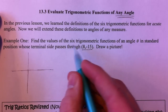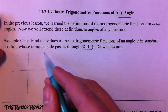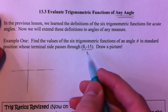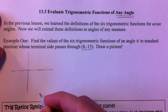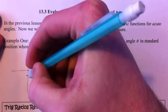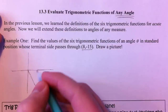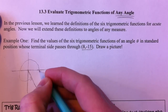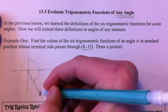Find the values of six trig functions in standard position whose terminal side passes through (8, -15). There's a lot going on here, but let's start with 8, negative 15 — we've got an angle. It doesn't matter if it's gone around this way or around this way, because it makes a triangle.